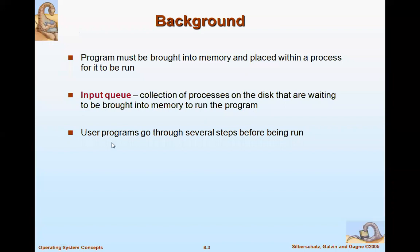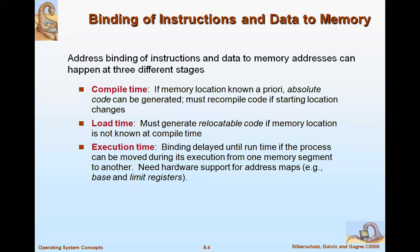User programs go through several steps before being run. Before executing a process, we bind some instructions — this is called address binding. It describes how we get the address of processes and bind the data to memory addresses. Address binding can happen at three different stages: compile time, load time, and execution time.